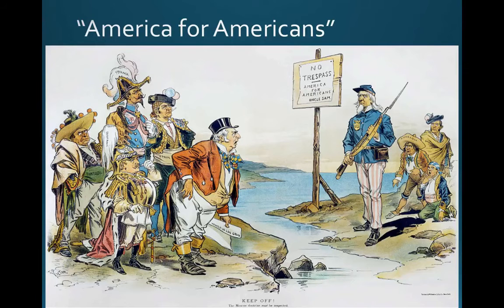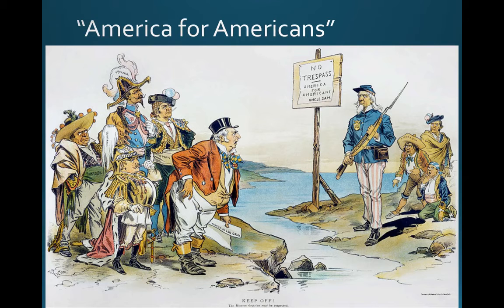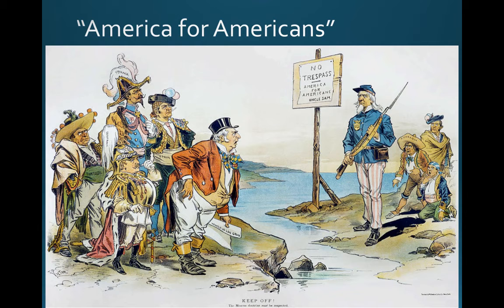Here you can see a political cartoon from the time period. On the bottom you can read 'Keep off — the Monroe Doctrine must be respected.' The river in the image represents the ocean between the Western and Eastern Hemispheres. There's a 'No Trespass — America for Americans, sincerely Uncle Sam' sign, and Uncle Sam is protecting South American and Central American countries — you can see Venezuela, Nicaragua, and others. The figures on the other side are dressed stereotypically in the garb of their countries: Portugal, France, Spain, and Germany. The cartoon clearly represents the actions and intent of the Monroe Doctrine.